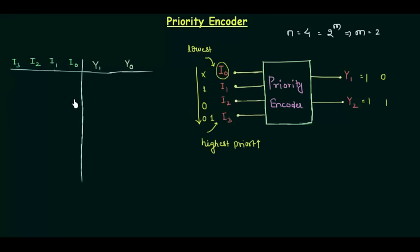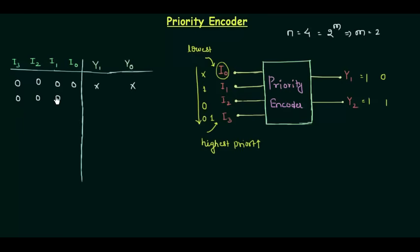Let's quickly move to the truth table — once we are done this will be much clearer. The first case is when all four inputs are 0; in that case the outputs are simply don't care. When i3 is 0, i2 is 0, i1 is 0, and i0 is 1, then y1 is 0 and y0 is 0. Very simple.